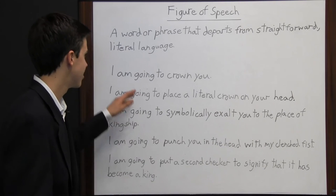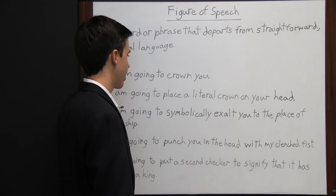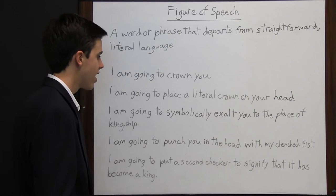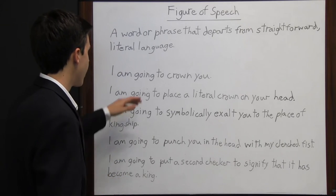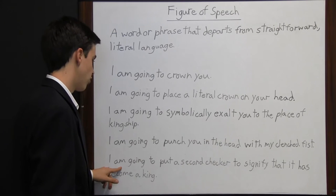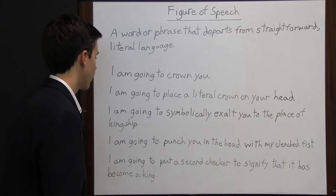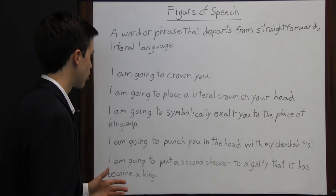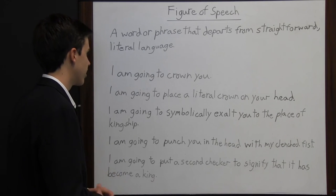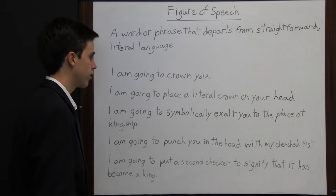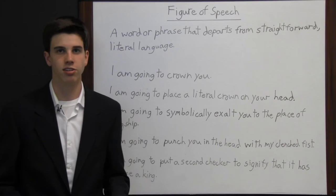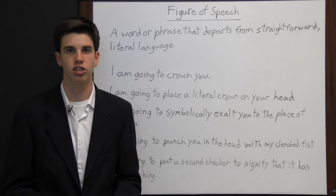In some passage, this sentence is going to be surrounded by other sentences. If the person is talking in the context of board games, then the reader could probably assume "I'm going to crown you" means putting a second checker on. Or if the passage mainly talks about kings and queens, the reader could imply it means placing a literal crown on your head. The reader just has to use the context to determine the meaning of a figure of speech.